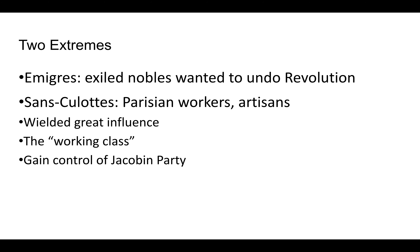Oftentimes in societies the extremes — the vocal minorities — have the biggest say because they wield a lot of influence. The two extremes in French society during 1790–1791 are the émigrés, the nobility who were exiled and fled France when the revolution happened, as peasants rose up and attacked their feudal lords. These nobles wanted to undo the revolution and restore the monarchy and their own influence to its previous status.